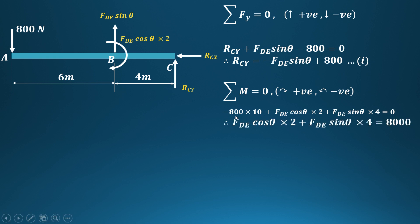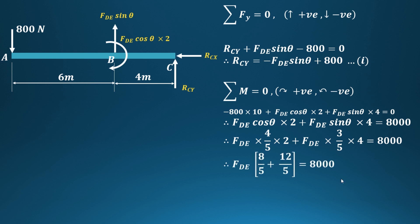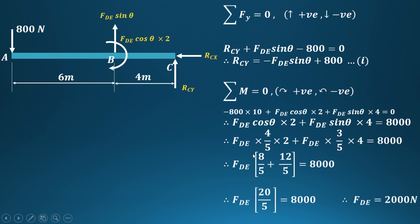Rearranging: 800×10 = 8000 is transferred to the positive side. Substituting cos θ = 4/5 and sin θ = 3/5, and taking FDE common: FDE × (4×2/5 + 3×4/5) = 8000, which gives FDE × (8/5 + 12/5) = FDE × 20/5 = 8000. Therefore FDE = 2000 N.